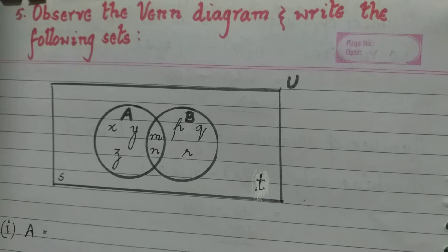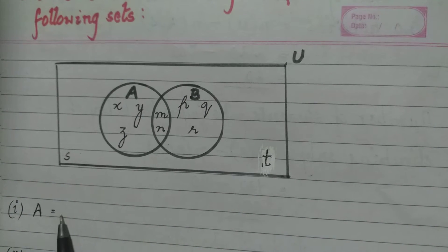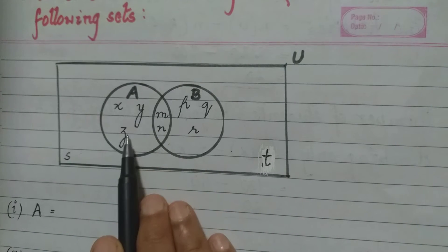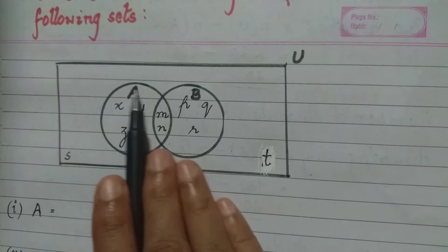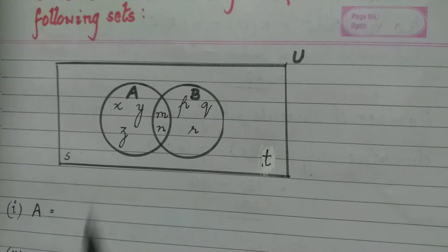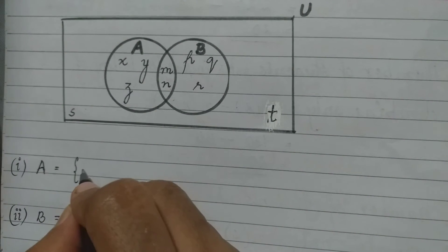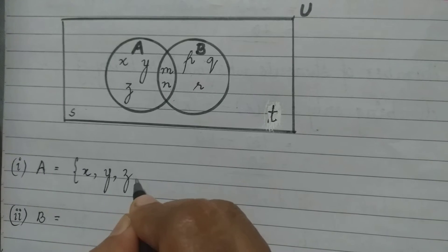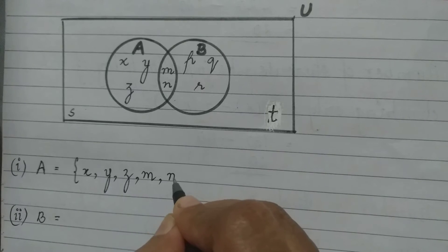The first sub-question is to write the elements in set A. That will be X, Y, Z, and also M and N because they lie in the same circle. So set A will consist of the elements X, Y, Z, M, and N.